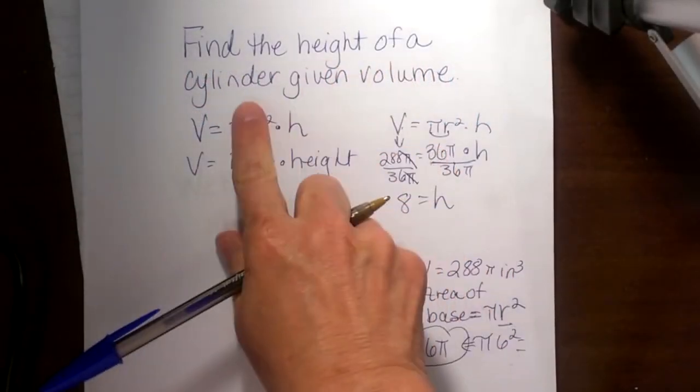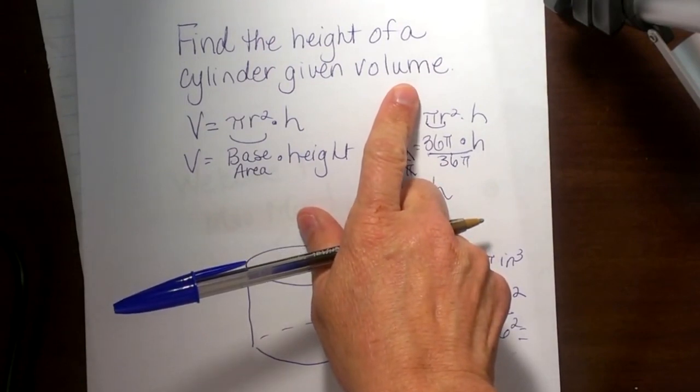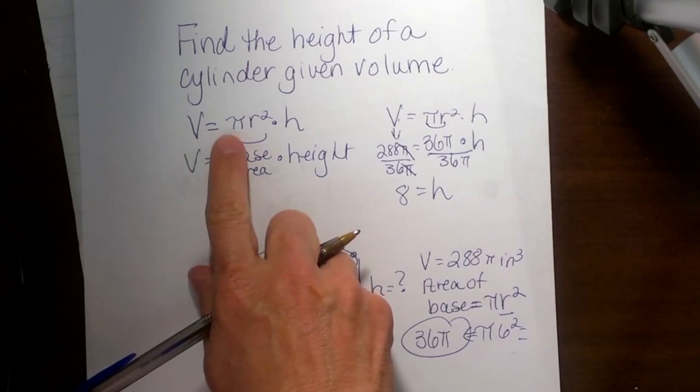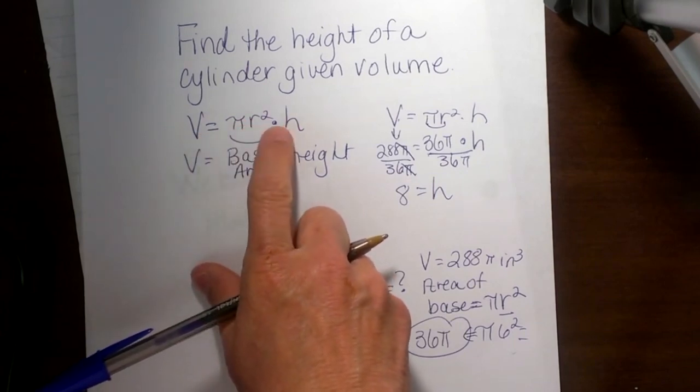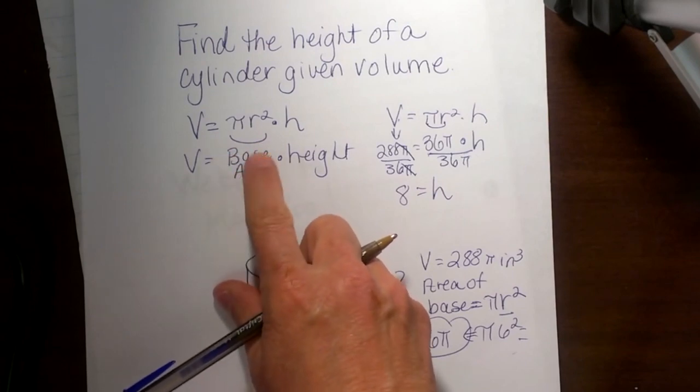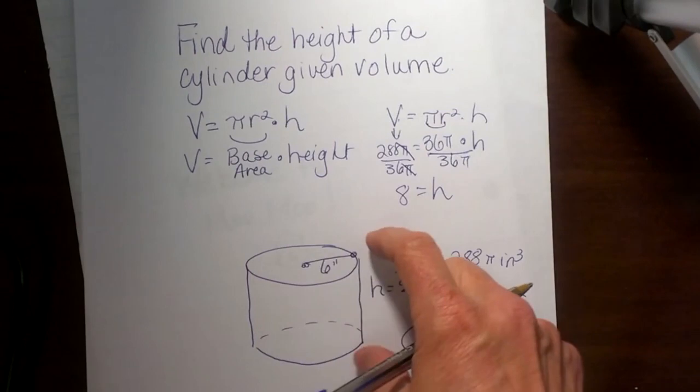How to find the height of a cylinder given the volume. First, we need to know the volume formula for a cylinder. The volume formula is V = πr²h. Pi r squared is just the base area of the cylinder times the height.